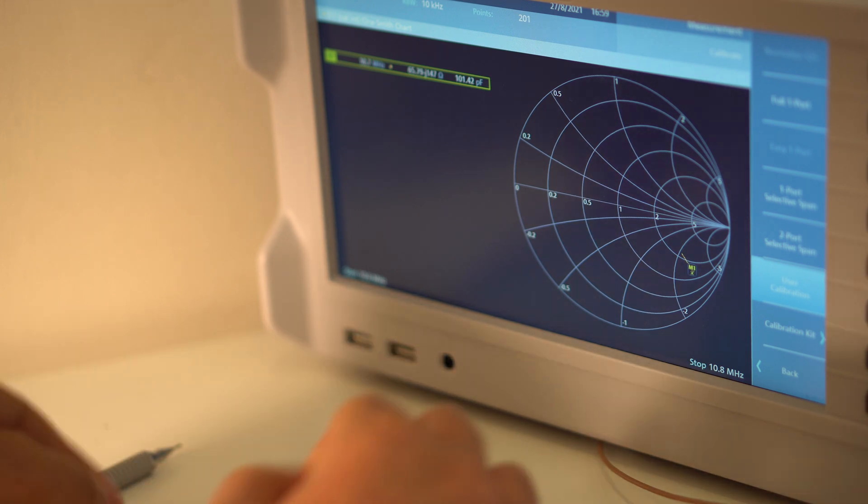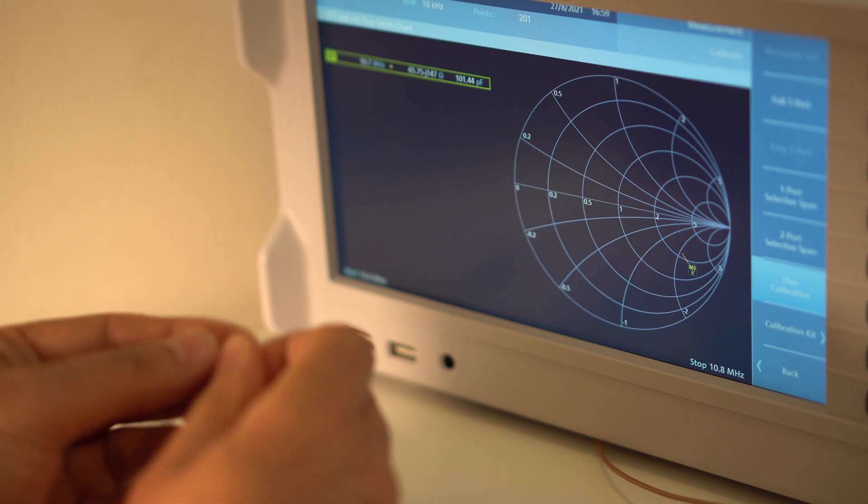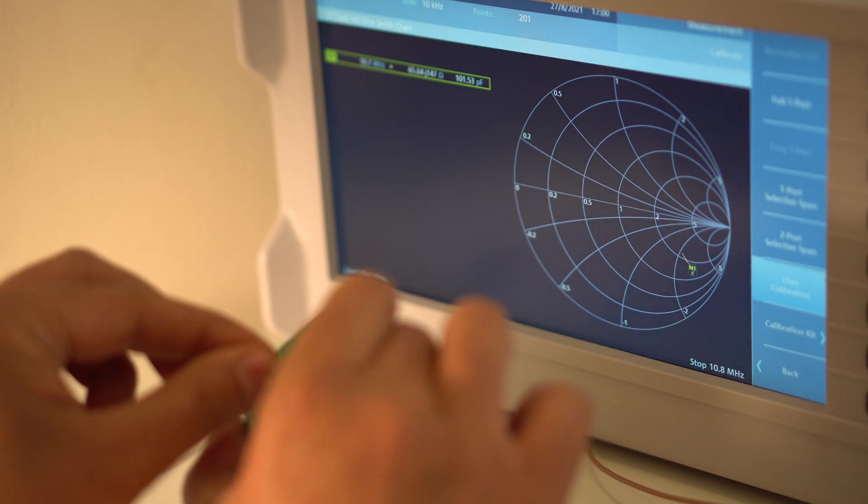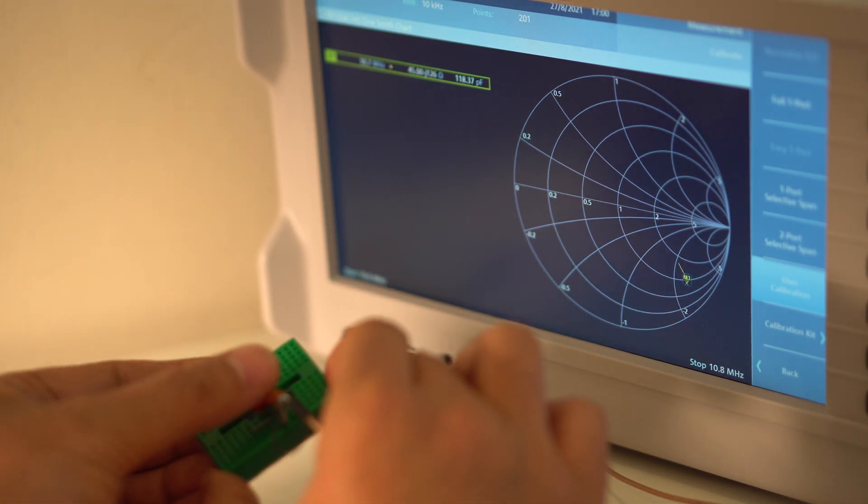So if I find the 22 picofarads somewhere, and add that in parallel. So now I've got 122 picofarads there. And there, it's now moved and it's pretty much on that line now.